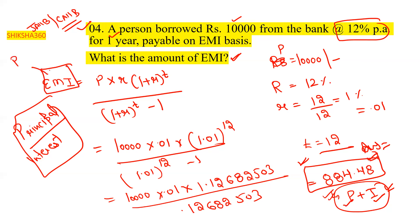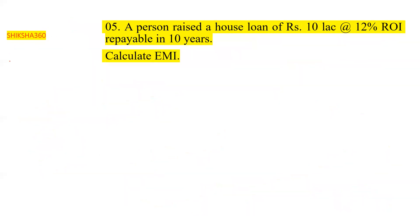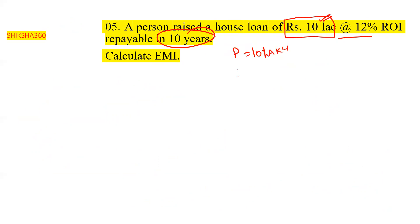Moving to the last question of today's session: a person takes a housing loan of rupees ten lakh at the rate of 12 percent per annum, repayable in 10 years. So: P = 10 lakh, r = 12% ÷ 12 = 1% = 0.01 per month, and t = 10 × 12 = 120 months.